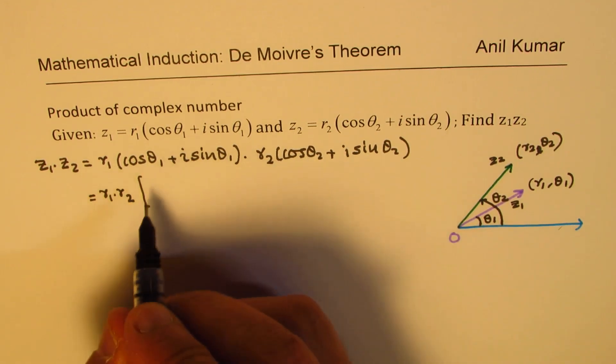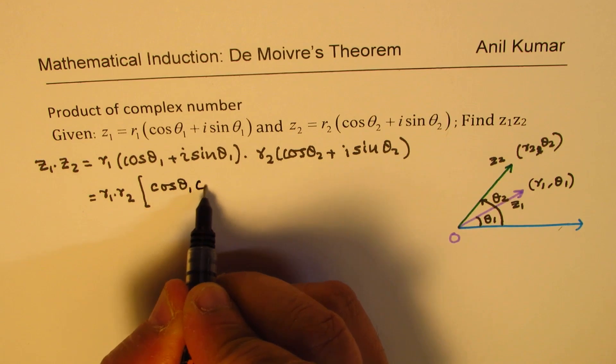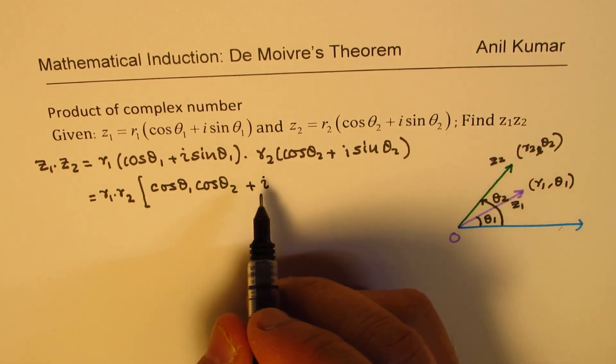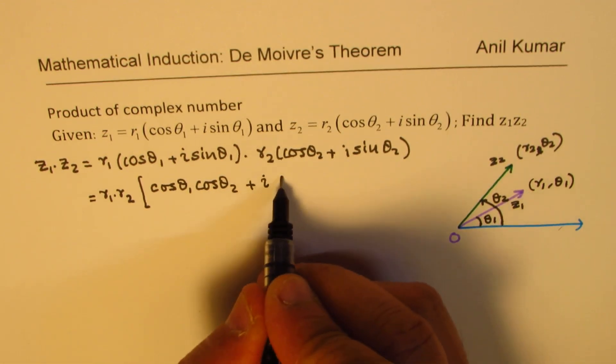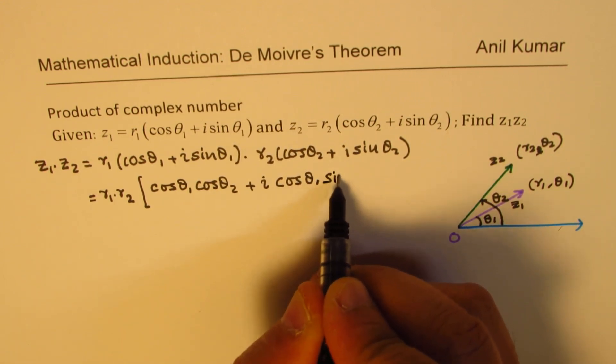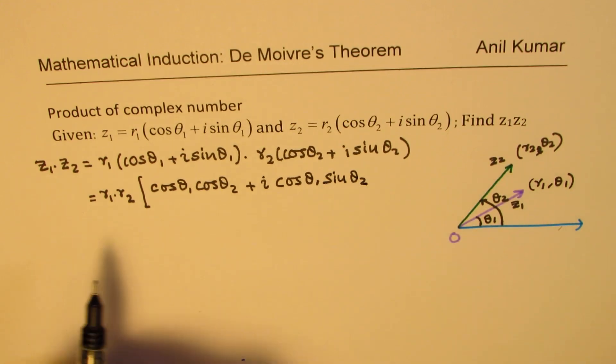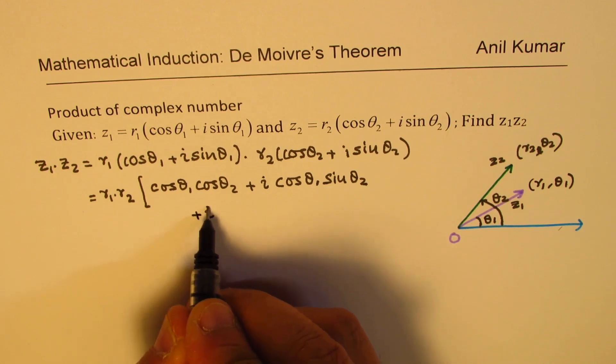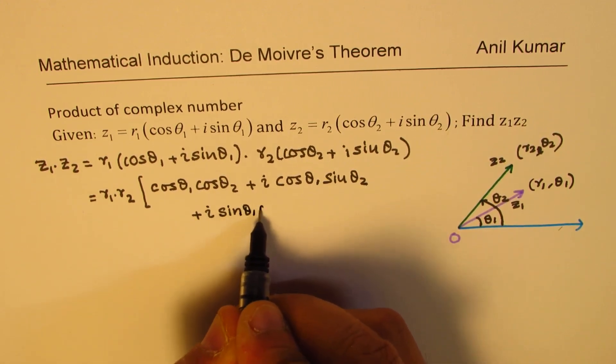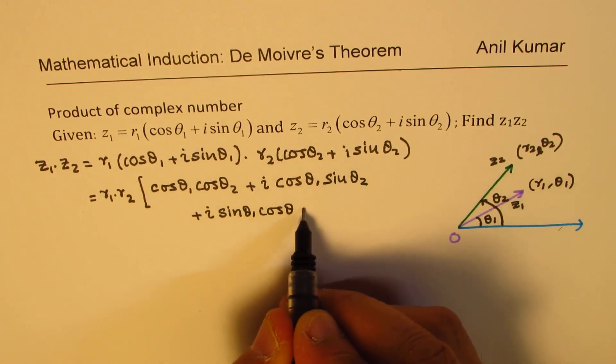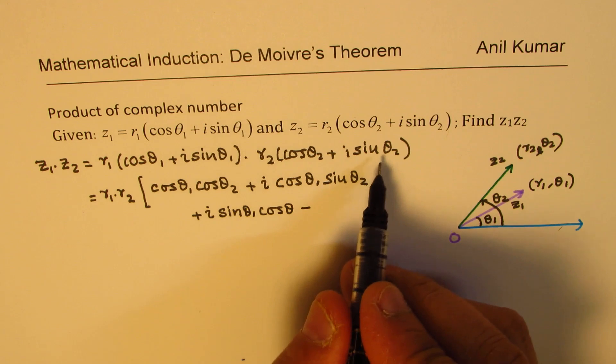So cos θ1 cos θ2 plus i times cos θ1 sin θ2. Now multiplying with the second term we get plus i times sin θ1 cos θ2. i squared is minus 1, so we'll write minus sin θ1 sin θ2.